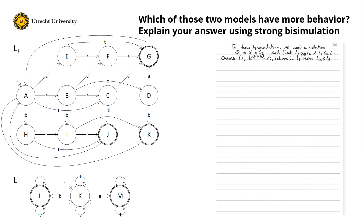Now let's see whether we can find such a relation. So we need to find a Q from S1 to S2, such that L1 is strongly simulated by L2. For this, I first make a table of the actions.